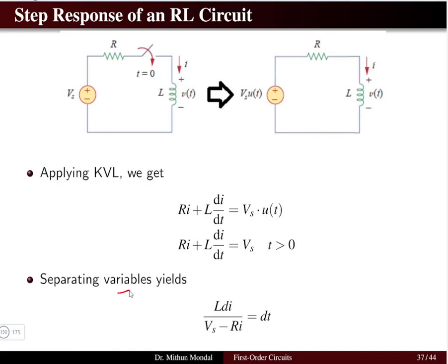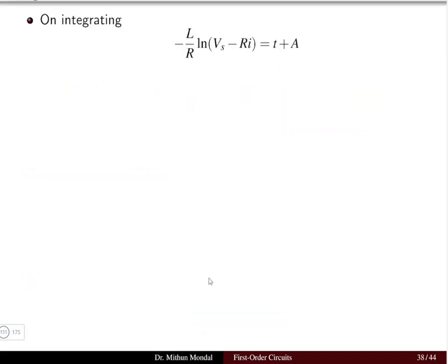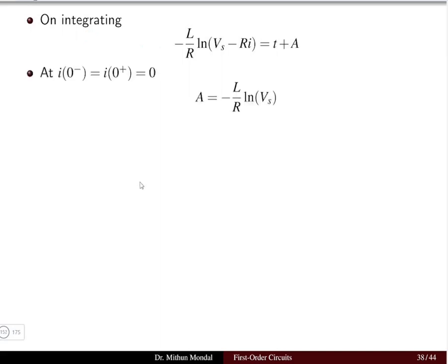Separating variables, we rewrite the equation as L·di / (Vs − Ri) = dt. Integrating both sides gives a solution with a constant of proportionality A that we must determine using boundary conditions. Since an inductor does not allow a sudden change in current, the current at t = 0⁻ equals the current at t = 0⁺.